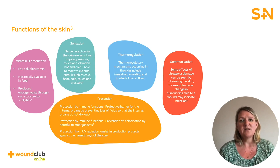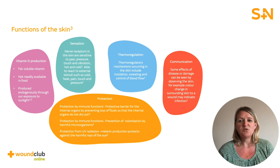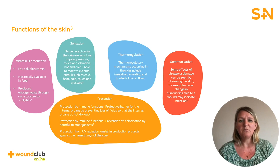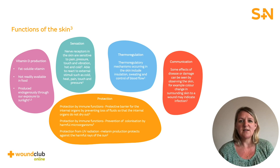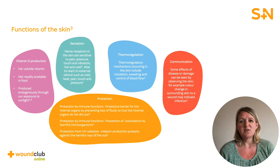Vitamin D is a fat-soluble vitamin that is naturally present in very few foods, and its production is stimulated by sunlight exposure. Melanin production determines a person's pigmentation and protects against the harmful rays of the sun. Sensation is the result of nerve receptors in the skin that are sensitive to pain, pressure, touch, vibration, heat and cold, making us able to react to external stimuli such as temperature change.